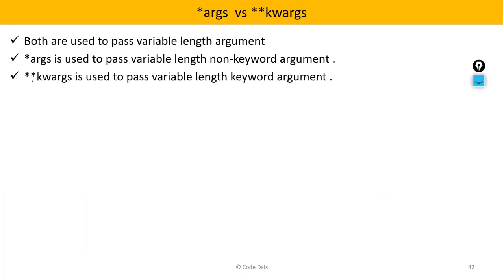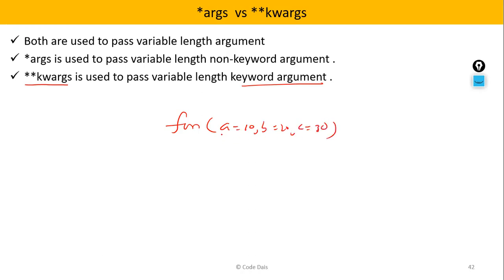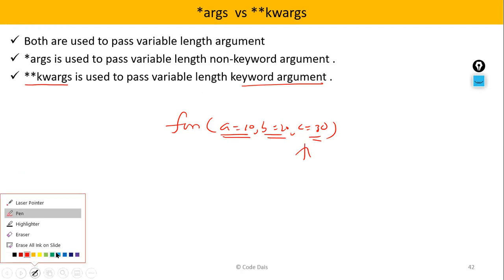Next, **kwargs is basically used to pass variable length keyword arguments. That means if you have a function, you can call it by passing keyword arguments like a=10, b=20, c=30. So you pass keyword arguments basically.